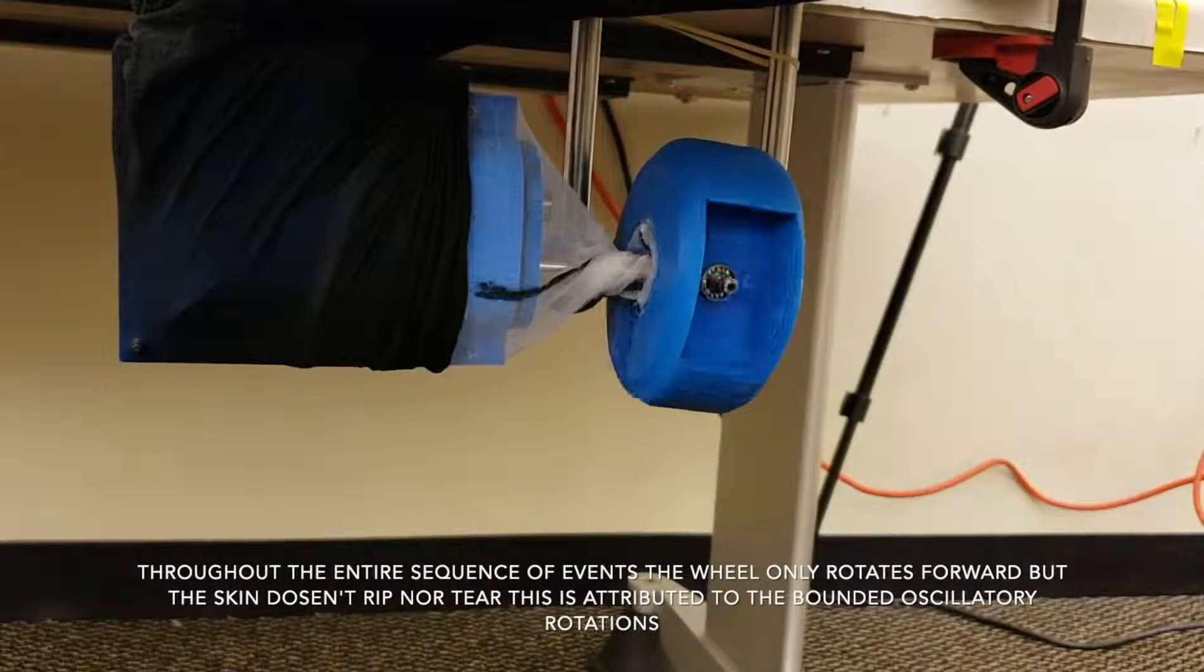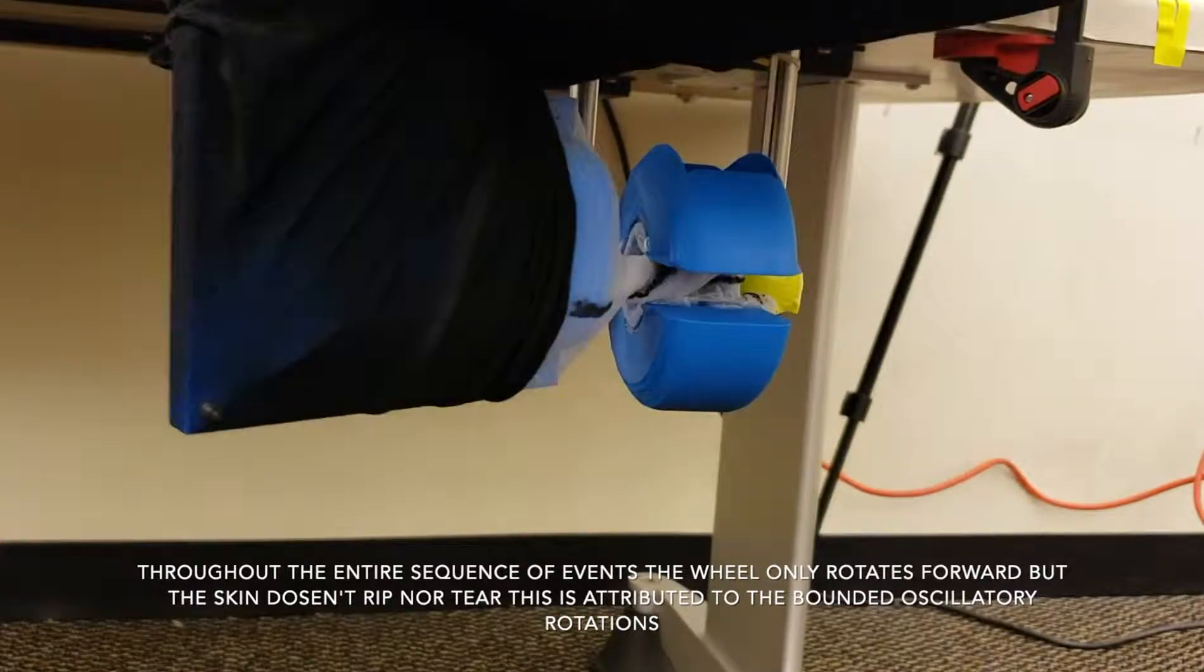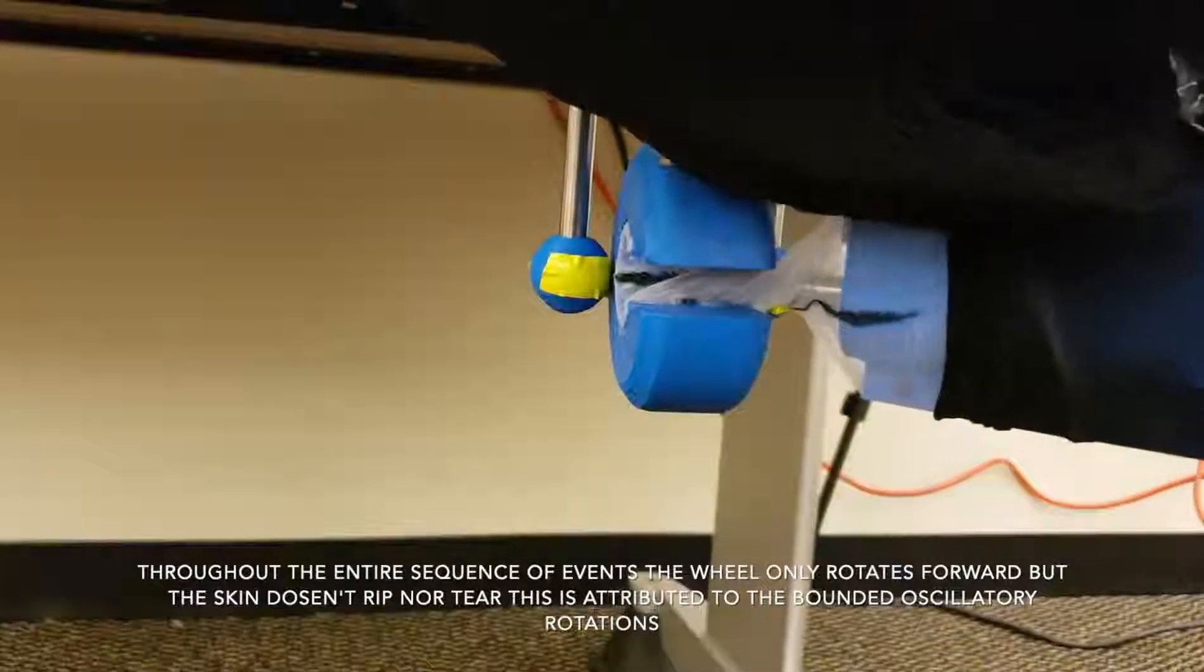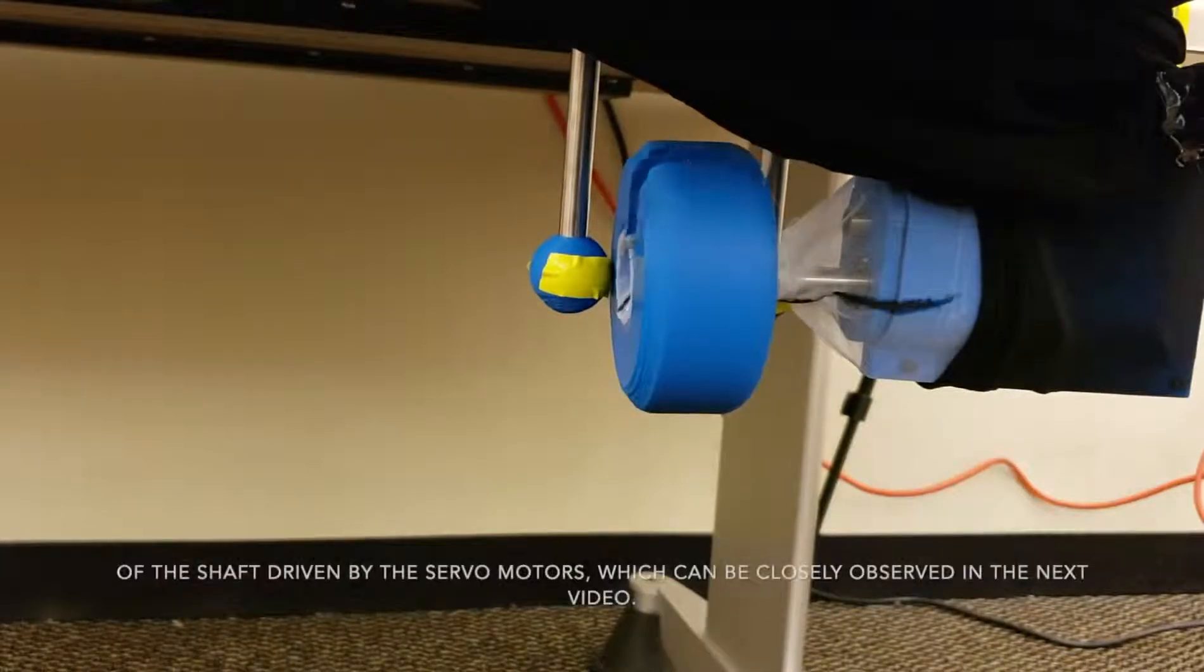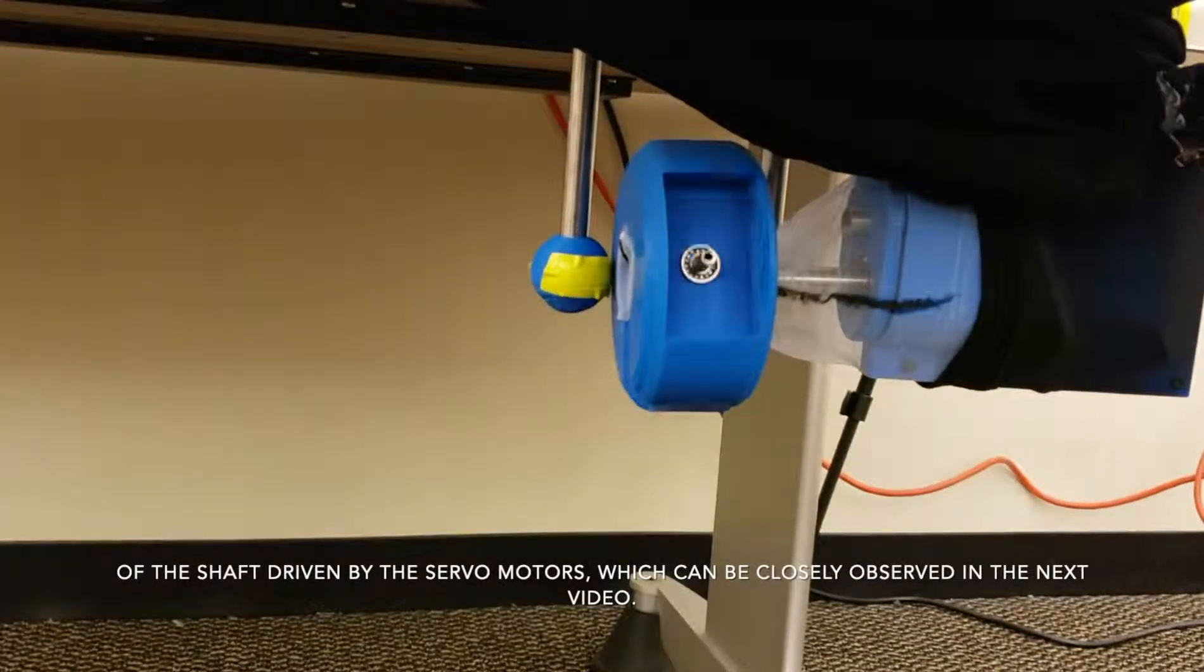Throughout the entire sequence of events, the wheel only rotates forward, but the skin doesn't rip nor tear. This is attributed to the bounded oscillatory rotations of the shaft driven by the servo motors, which can be closely observed in the next video.